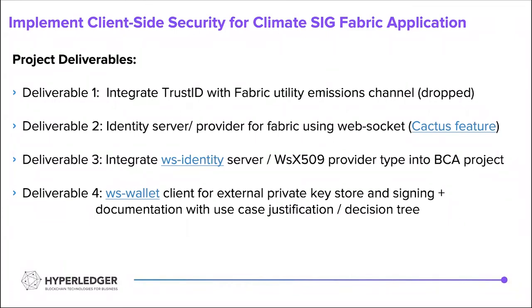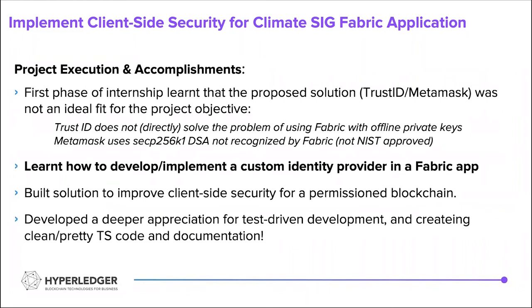The second project objective was implementing custom X.509 certificates — storing the certificate without the keys for use in the network — and integrating this into the Blockchain Carbon Accounting application. The first deliverable was integrating TrustID with the Fabric Utility Emissions Channel to access an external client wallet like MetaMask. We moved on to building an identity server and provider for Fabric using WebSocket, packaged as a Cactus feature. The third deliverable was integrating this WS-X.509 credential type into the project, and finally setting up the WS wallet for secure external private key storage.